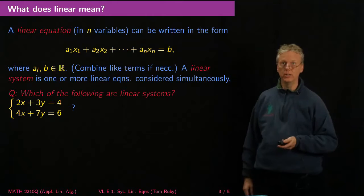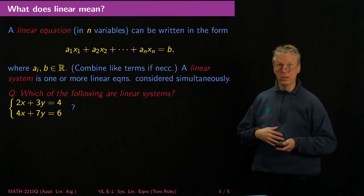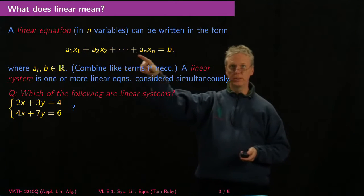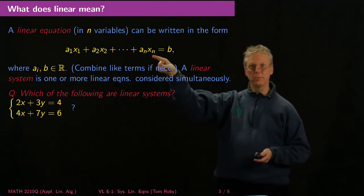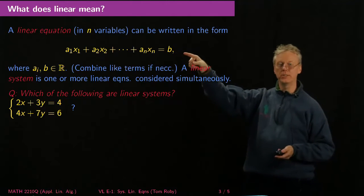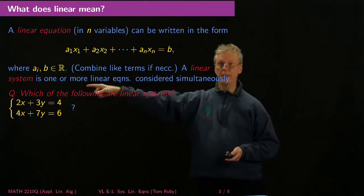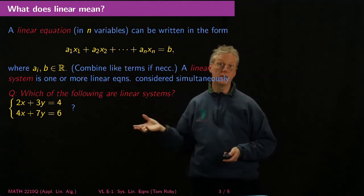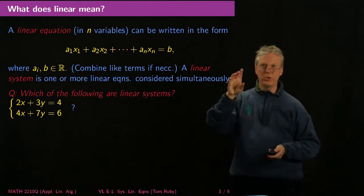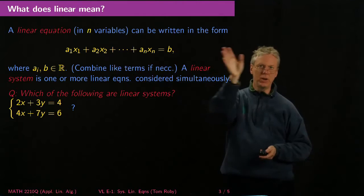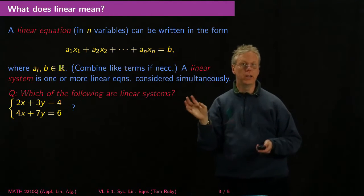So what's a linear equation? Well, it can always be written in the form a₁x₁ + a₂x₂ + ⋯ + aₙxₙ = b, where aᵢ, b ∈ ℝ. I want to think about the xᵢ's as being variables, those are the n variables, and these a sub i's and b's are any real numbers I want. Now, sometimes I may have a situation where I've got an x₂ on one side of the equation and an x₂ somewhere else in the equation, maybe on the other side. I can always combine like terms if I need to.